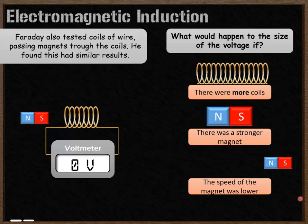What would happen to the size of the voltage created if there were more coils of wire for the magnet to pass through, the magnet was stronger, or the speed of the magnet was much slower? Pause the video and then we'll discuss the answers.